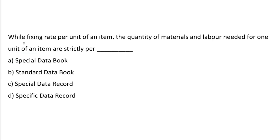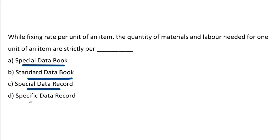Next question: while fixing the rate per unit of item, the quantity of material and labor needed for the one unit of item is as per — Option A: Special data book. Option B: Standard data book. Option C: Special data record. Option D: Specific data record. The correct answer is option B, Standard data book.